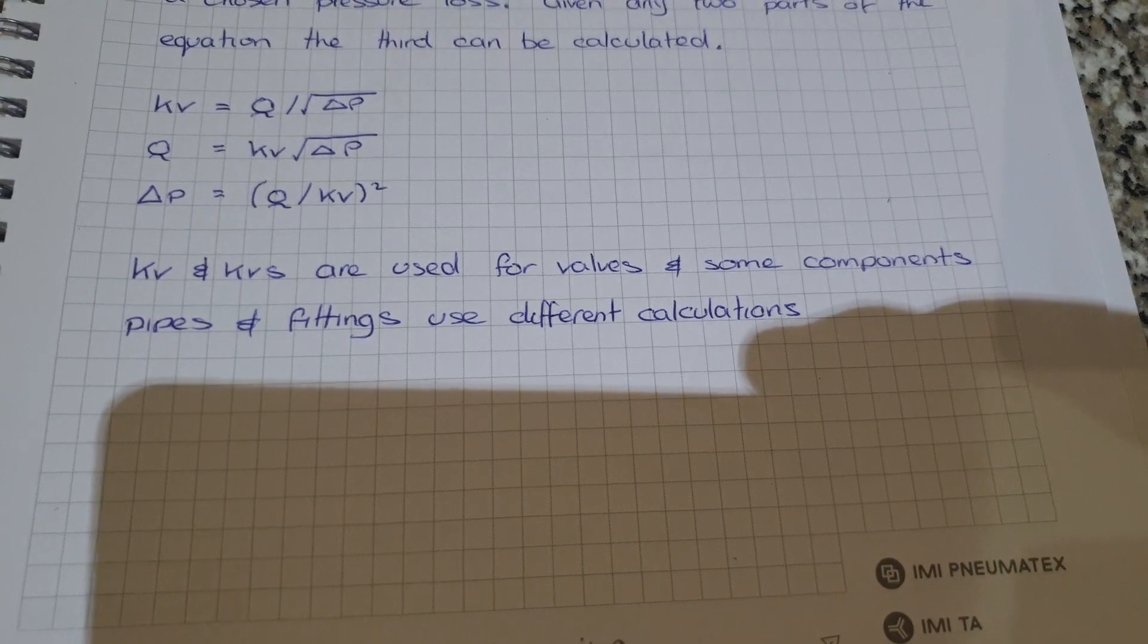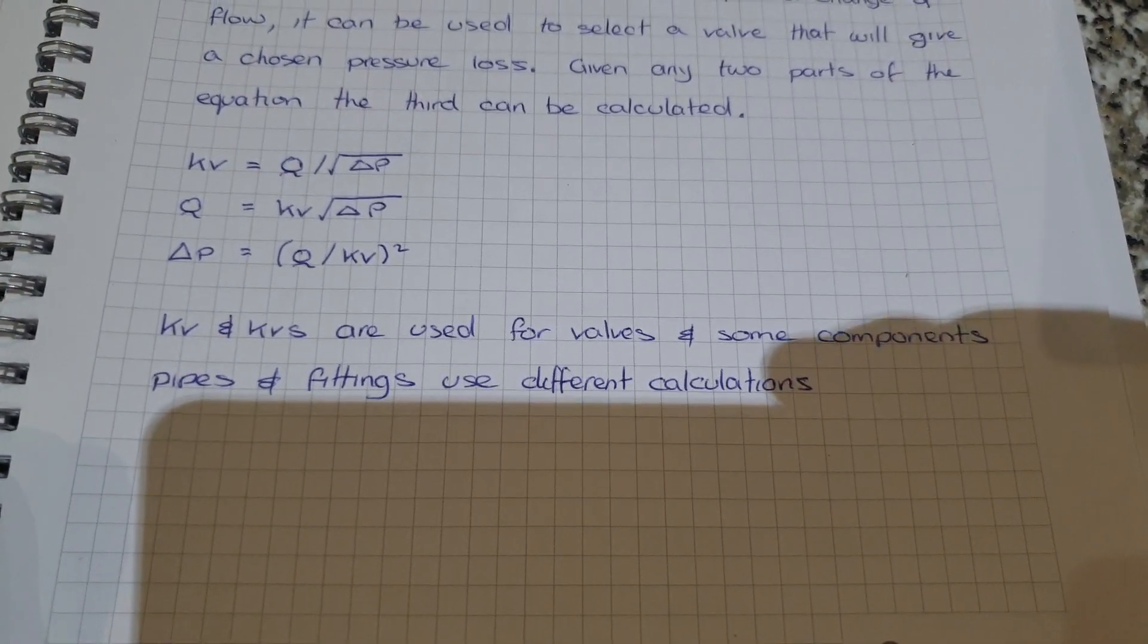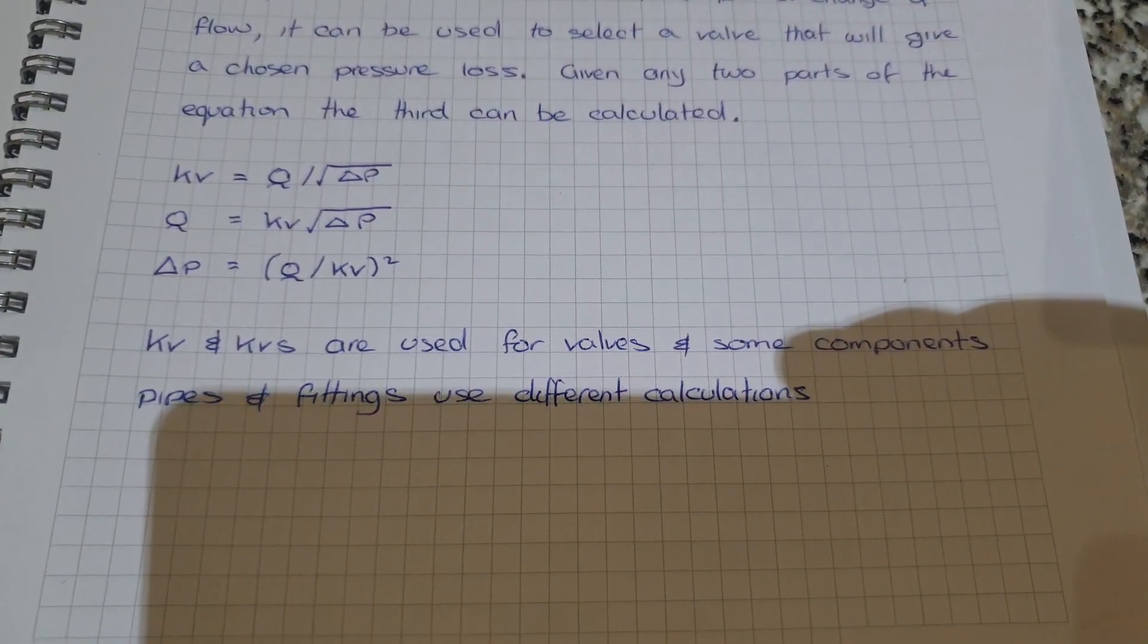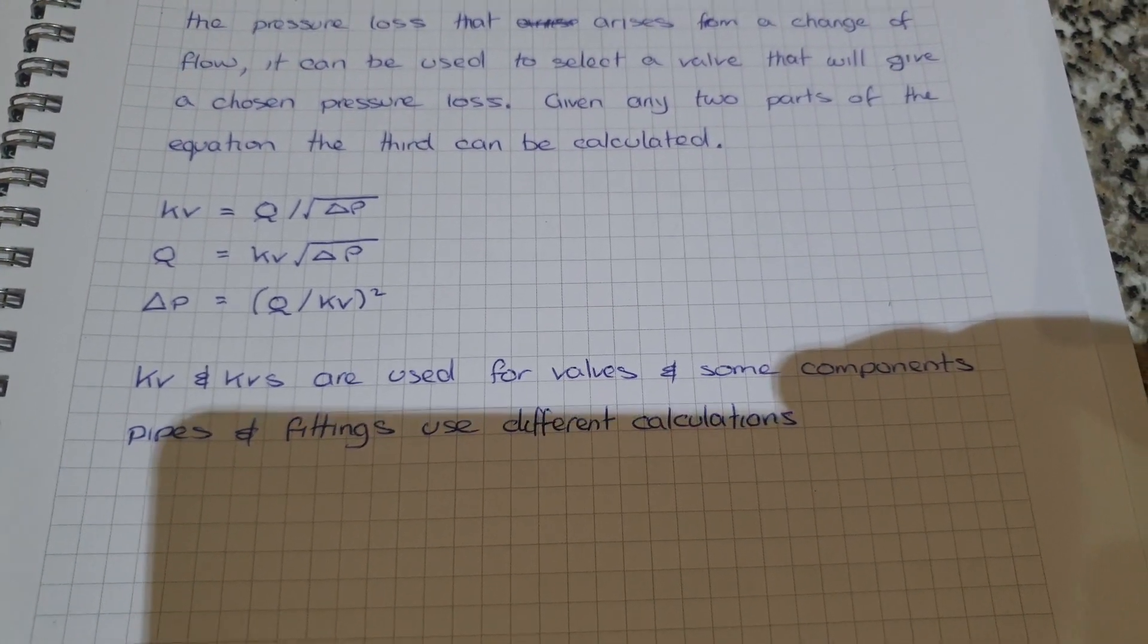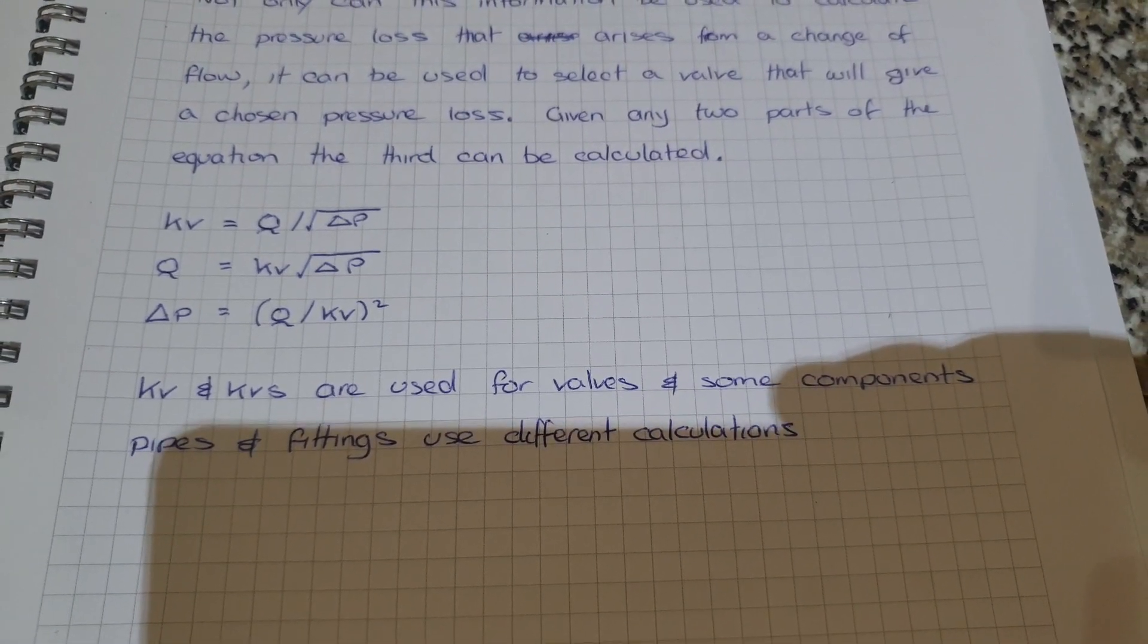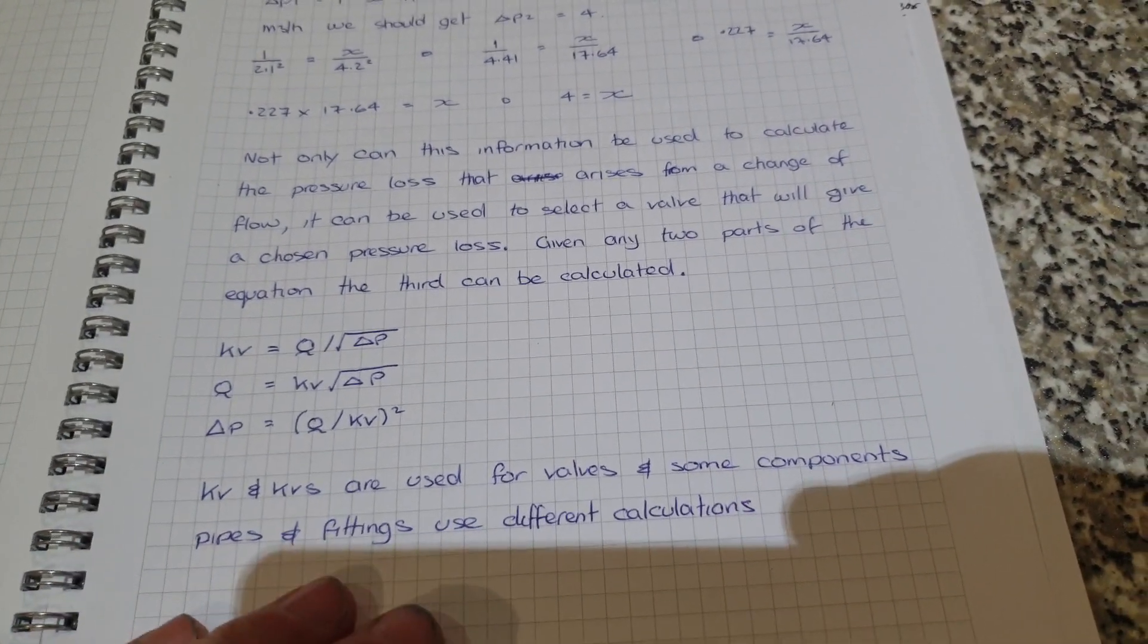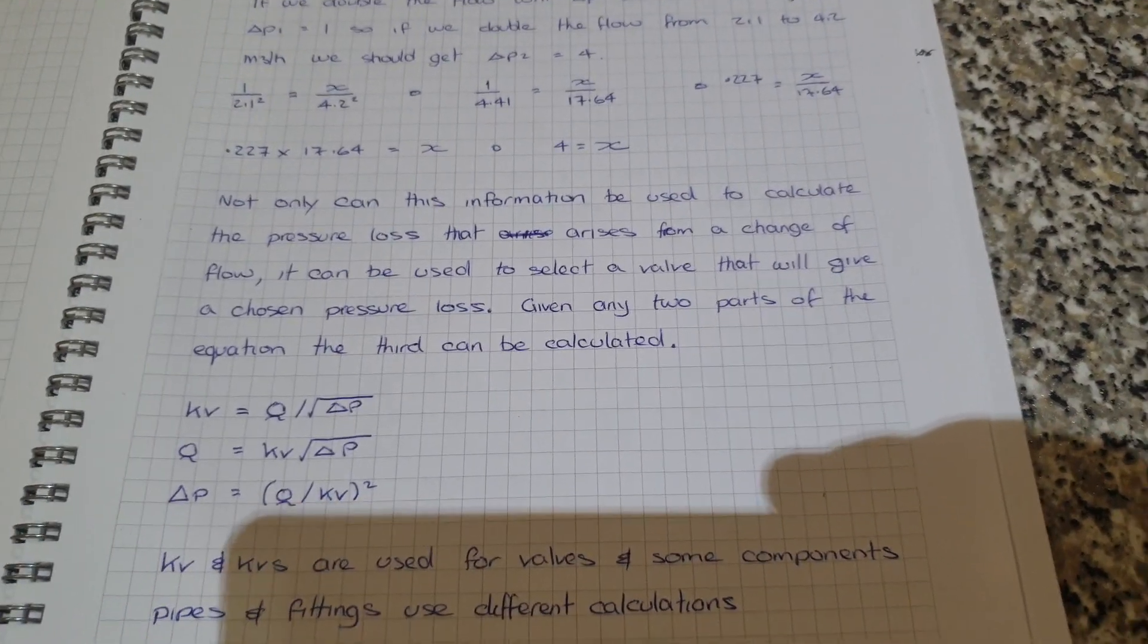KV and KVS are used for valves and some components. Pipes and fittings use different calculations. I'm going to do a little bit later on the other formulas used for losses in straight pipes, Reynolds numbers, turbulent and laminar flows, and pressure losses in fittings. I've written them out already, but I sort of wouldn't confuse today with those. Also, at the moment I'm working on the next section related to this, which is the valve authority.